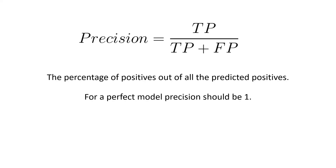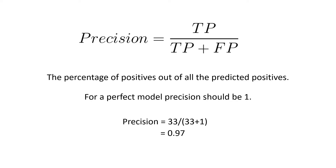Let's look at precision. Precision is true positive over (true positive plus false positive). False positives are actually negatives that our model predicted as positive, so true positive plus false positive represents all the positives our model predicts. Precision is the percentage of correct positives out of all predicted positives. For a perfect model, precision should be one — meaning no false positives. For our heart disease prediction model, precision came out to be 0.97, since we had only one false positive.